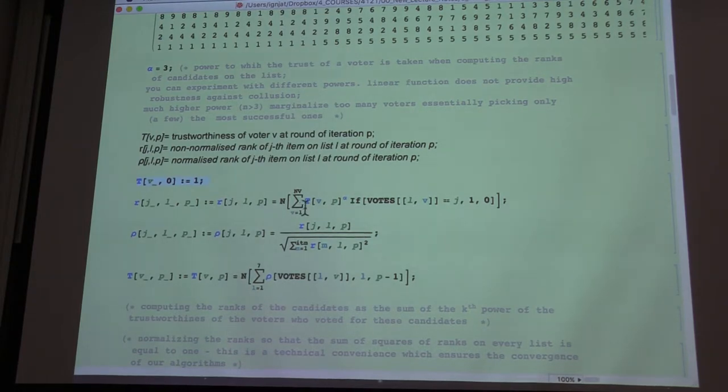And in this sum, if voter v of list i has voted for item j, then this trustworthiness of that voter will be added to the tally for the j-th item.